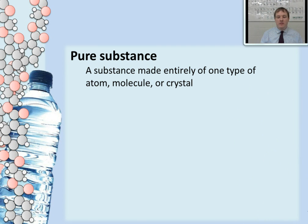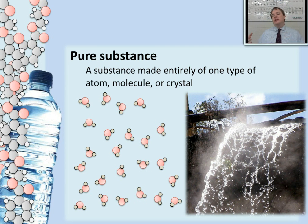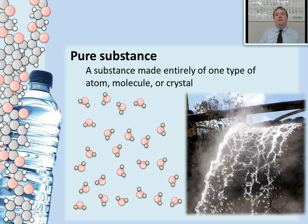Here we have water. Water is a pure substance because it's made up of just one type of molecule. Even though there are two different types of atoms in those molecules — hydrogens and oxygens — it's just one type of molecule. Each molecule is bonded the exact same way. Every building block of this substance is a water molecule, and it's the same molecule that makes this a pure substance. So anytime you have matter made up of just one type of building block — the same kind of atom, molecule, or crystal throughout — that makes it a pure substance.